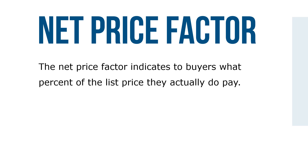For example, if the net price factor of a series of discounts is calculated to be .665, this means the buyer is paying 66.5% of list price.